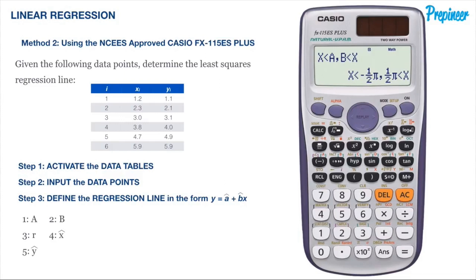You will be brought to a menu where, with all of our data stored in the calculator, we can get a number of metrics. We are also able to solve for a certain independent or dependent value based on that data. The first variable we must define for our regression line is a, so press 1 to select option 1 for a. We will be brought back to the home screen with a displayed. Press the equals button to get our value, which is negative 0.143.